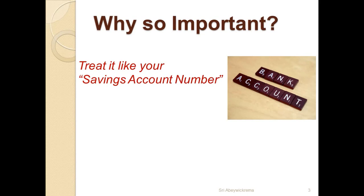The bank takes your money and issues you with a unique account number — nobody else will have that number. Later you go back to the bank and tell them you want to deposit more money. The banking assistant asks whether you have an account with them and, if so, for your account number. Why? So that the money you are depositing now will be added to your previous balance. If you had deposited ten thousand rupees previously and you deposit ten thousand rupees now, you will end up with twenty thousand rupees. The UCI acts the same way.